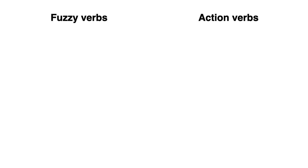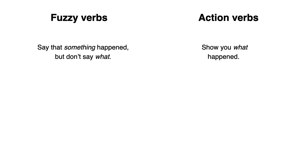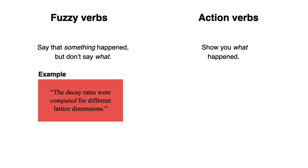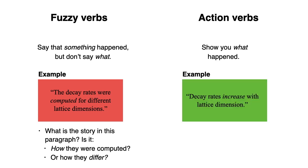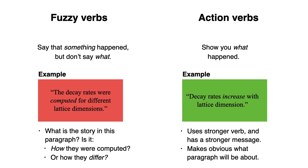I hope you've had a chance to work on the exercise. Now let's move on to the difference between fuzzy and action verbs. Fuzzy verbs tell us that something happened but don't say what, whereas action words actually show you what happened. Consider this example: "The decay rates were computed for different lattice dimensions." But what is the story — is it how they were computed, or how they differ? If it's how they differ, a better way to say it is: "Decay rates increase with lattice dimension." This uses a stronger verb, has a stronger message, and makes obvious what the paragraph will be about.